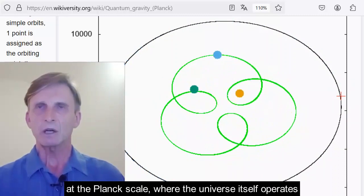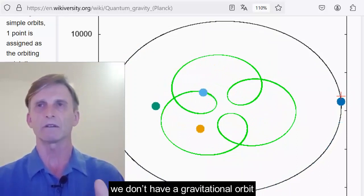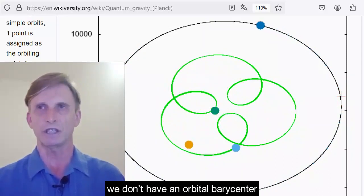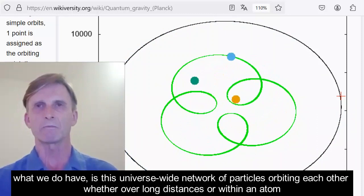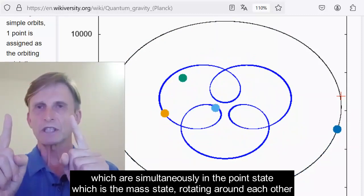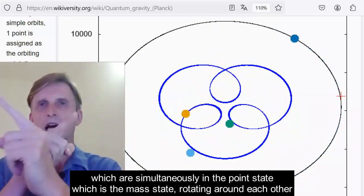At the Planck scale, where the universe itself operates, we don't have an Earth or a Sun. We don't have a gravitational orbit. We don't have a gravitational constant g. We don't have an orbital barycenter. And we're not distorting space-time. What we do have is this universe-wide network of particles orbiting each other, whether over long distances or within an atom. A gravitational orbital is simply two particles, which are simultaneously in the point state, which is the mass state, rotating around each other.